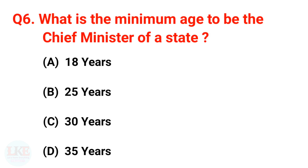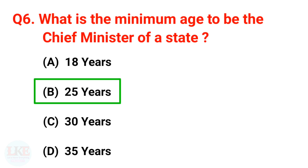Question number 6: What is the minimum age to be the Chief Minister of a state? The right answer is option B, 25 years.